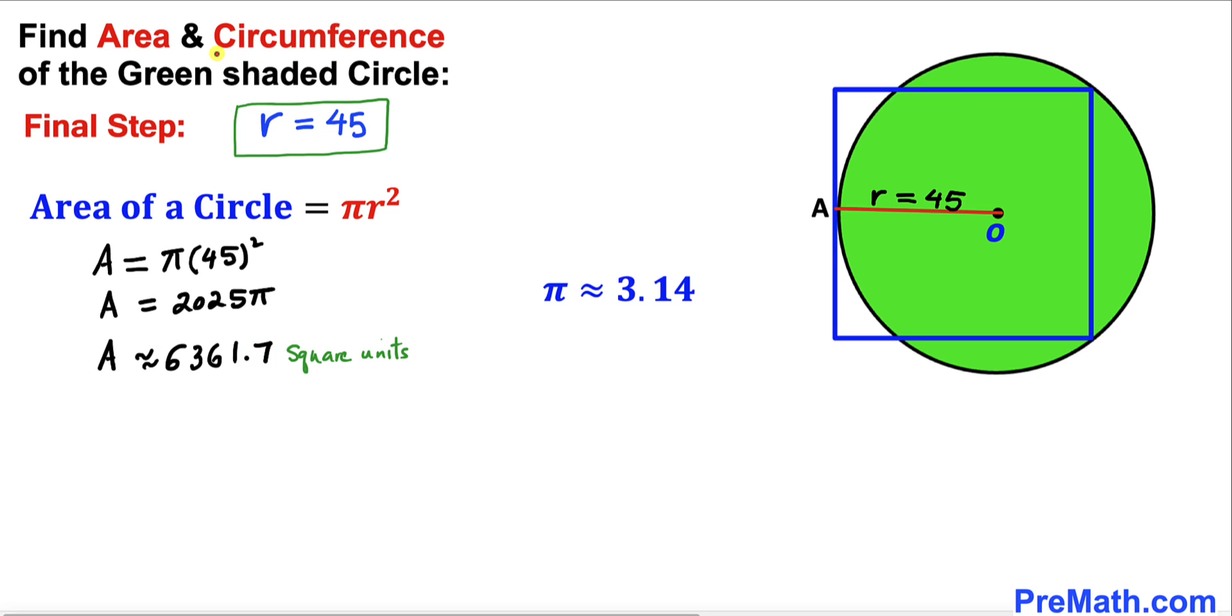And now let's calculate the circumference of this green circle. Here's the circumference of a circle formula which is equal to 2 pi R. So our circumference C is going to be 2 pi times our radius 45 units. Therefore our circumference is going to be 90 pi units. We know our pi value is approximately equal to 3.14, so our circumference is approximately equal to 282.7 units.